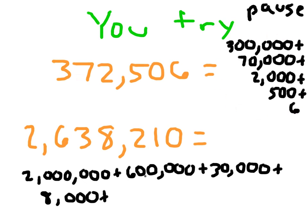For that first one, I got — and notice I wrote it up and down so you can see the place value very clearly — 300,000 plus 70,000 plus 2,000 plus 500 plus 6. That 5 was worth 500, and that 6 was worth 6. For the second one: 2,000,000 plus 600,000 plus 30,000 plus 8,000 plus 200 plus 10. A common mistake is to just write 210 — don't feel too bad if you did that, but you want to break that down: 2 is worth 200, and 10 is worth 10. That right there is our expanded notation.